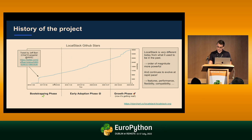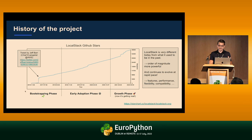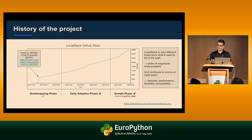A bit of the history of the project: it started as an open source project back in 2017. There was an initial bump when it got traction from a tweet by Jeff Barr, the chief evangelist at AWS. From then on it grew in the open source community. Now LocalStack is also a company with a team behind it, and we're entering a growth phase. If you've used LocalStack in the past, I'd encourage you to take a fresh look because it's very different today.